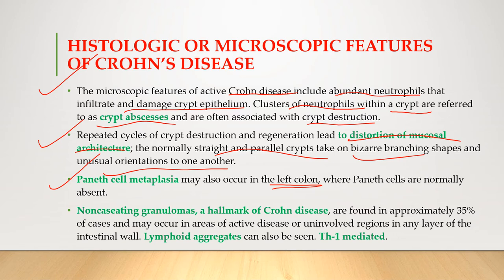Non-caseating granulomas can be seen and are a hallmark of Crohn's disease. Non-caseating means non-necrotizing granulomas. This is a special hallmark finding seen only in Crohn's disease on microscopy, found in approximately 35% of cases. They may occur in areas of active disease or in uninvolved regions in any layer of the intestinal wall, and they present with lymphoid aggregates mediated by T helper cells.